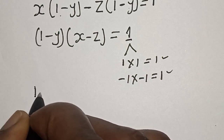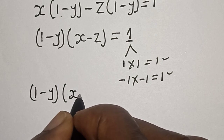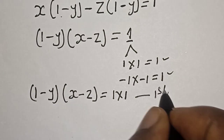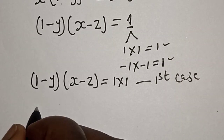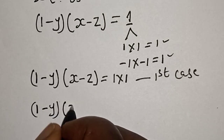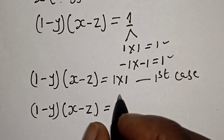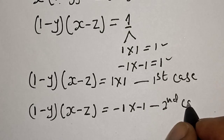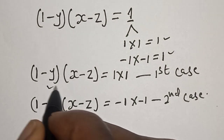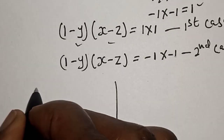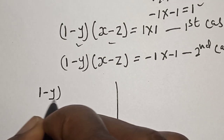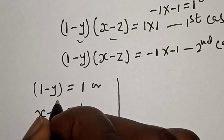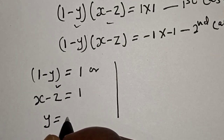For the first case: (1 minus y) equals one and (x minus z) equals one. From here, 1 minus y equals 1 gives us y equals zero.